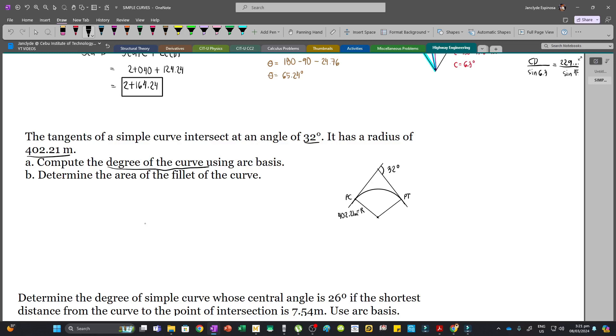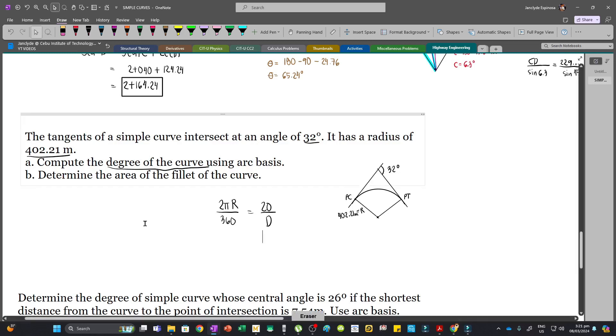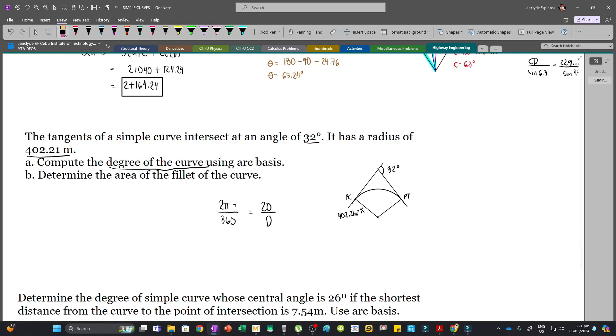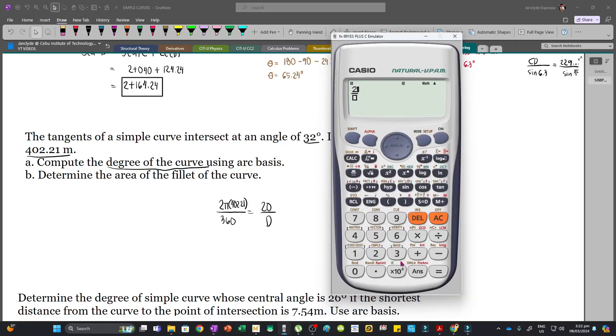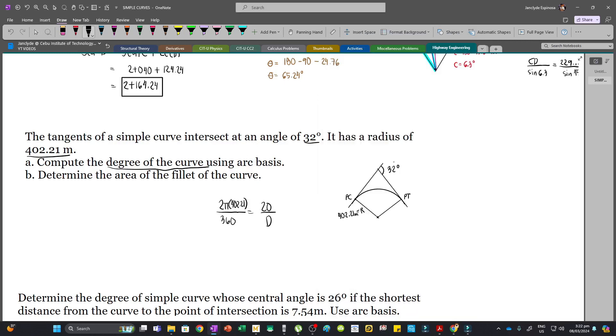First we are to find the degree of the curve using arc basis. So we have 2πr over 360 equals 20 over the degree of curve. However, since we know the radius, this will be 402.21. And so solving d, we have 2π times 402.21 over 360 is equal to 20 over d. So we have 2.85, so the degree of curve is equal to 2.85 degrees.